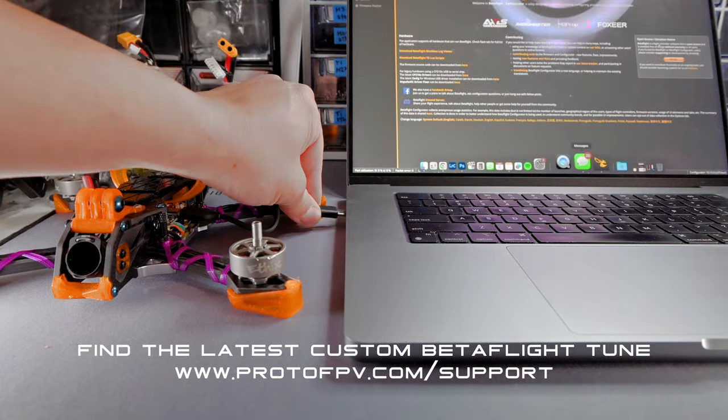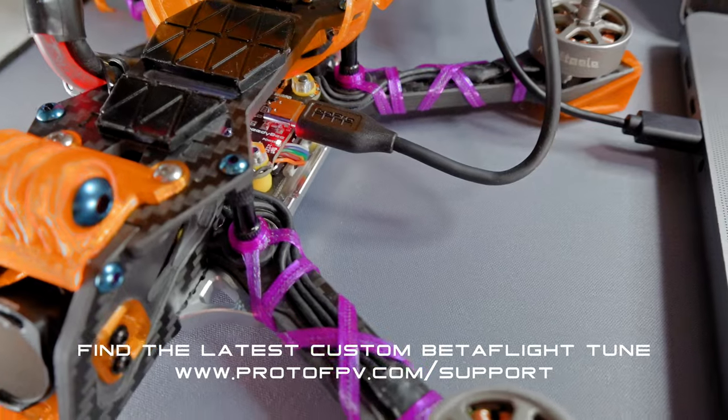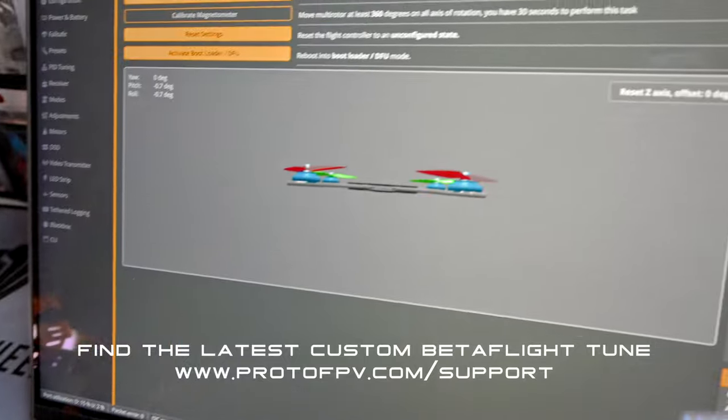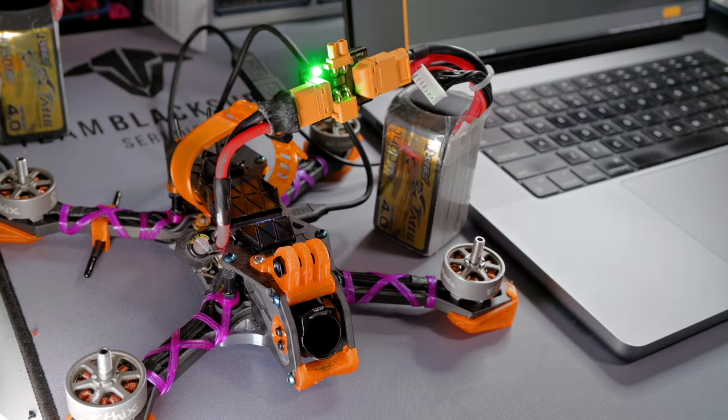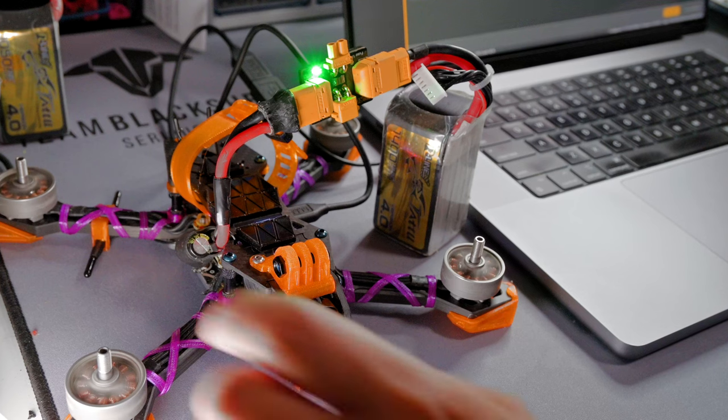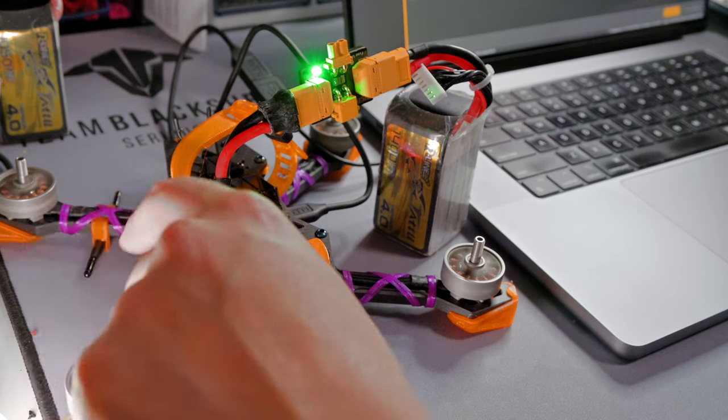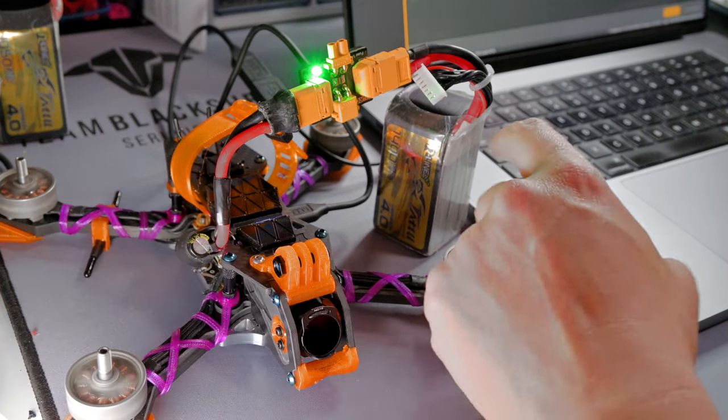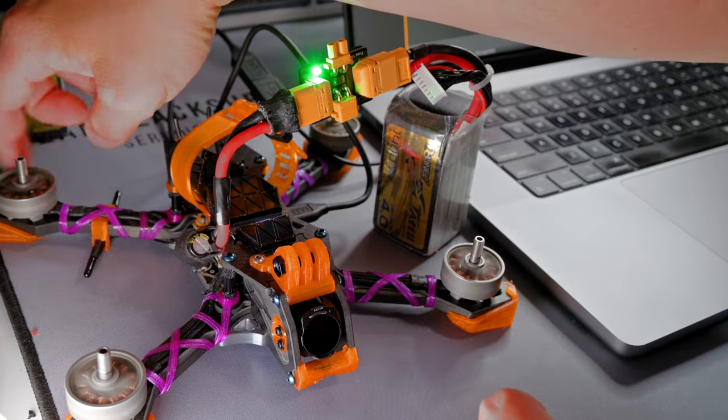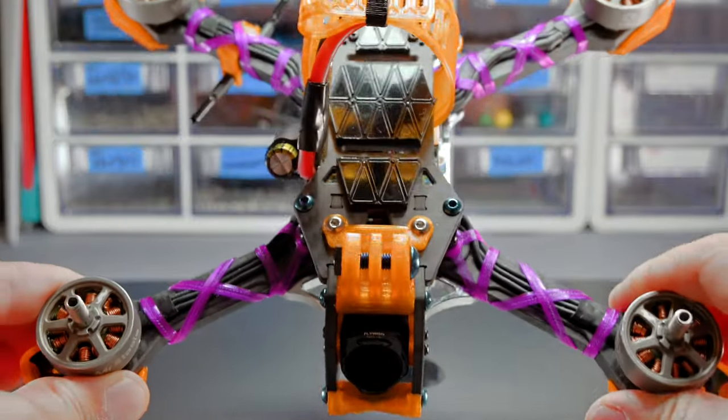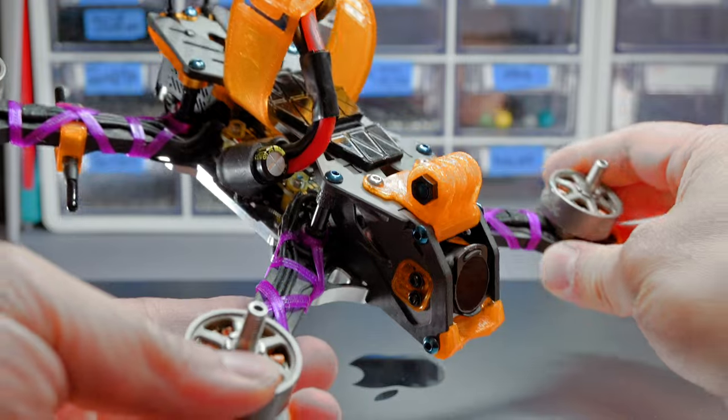So I personally made a custom tune for this quad. You can find it at protofpv.com in the support page. I like to run props out. Just make sure all your motor directions are correct. Make sure your quad is pointed in the right direction. Just check over all your settings before you're made in flight. Now you can make sure all the screws on your quad are nice and tight.